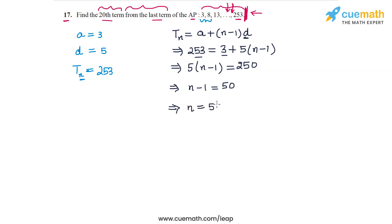So the term 253 is the 51st term of the AP. In other words, this AP starting from 3 and going up to 253 with a common difference of 5 has 51 terms. Now that we've calculated this, let's move to the actual question of finding the 20th term from the last term.